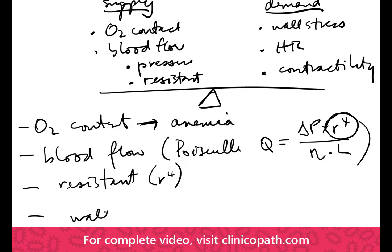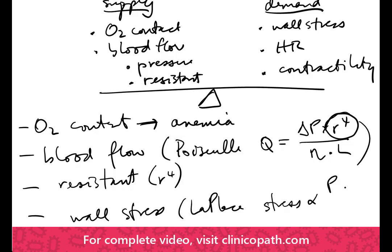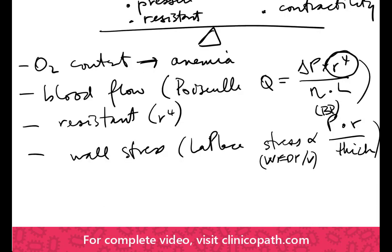On the demand side, we need to review wall stress, which comes from Laplace's law. Laplace's law states that wall stress is proportional to the pressure in the structure times the radius of the chamber, divided by the thickness of the wall. In practical terms, the proxies we use for wall stress are left ventricular end-diastolic pressure or volume. The pressure in the chamber is essentially blood pressure, and wall thickness refers to the thickness of the left ventricular wall.